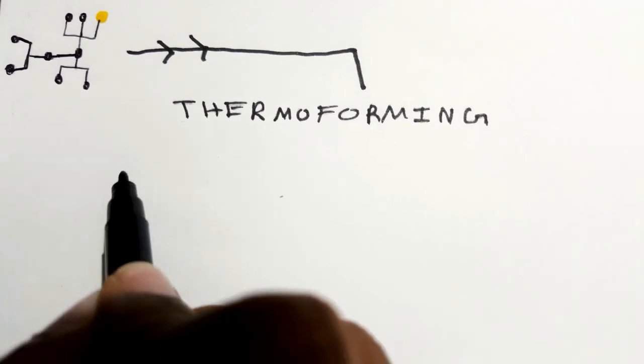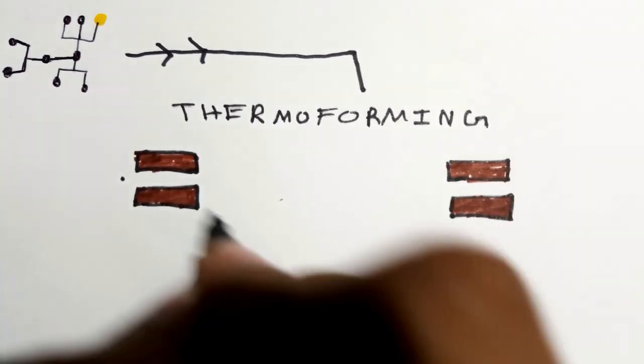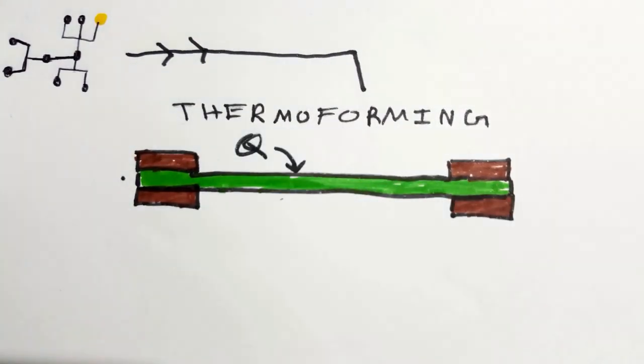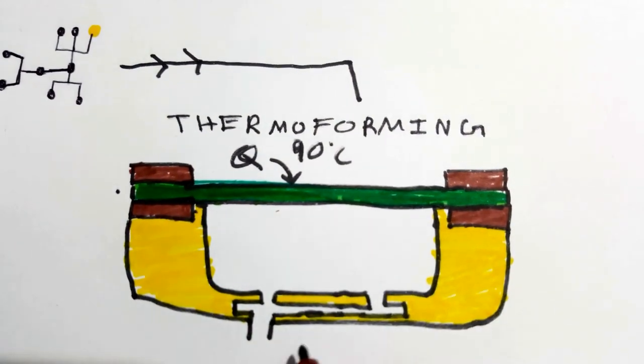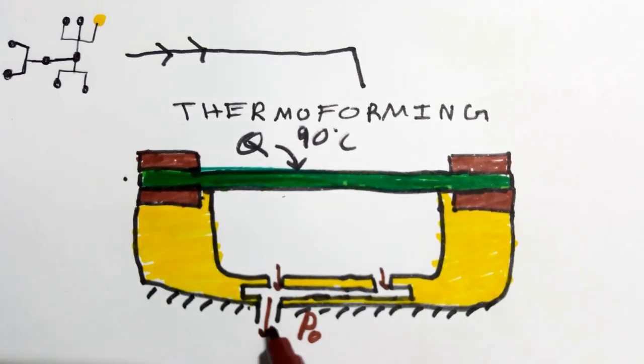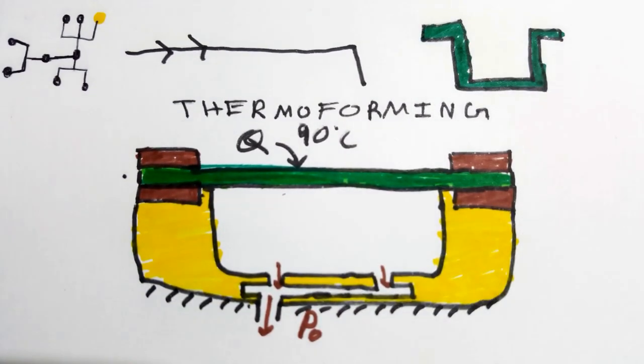Third and last type of thermoplastic moulding is thermoforming. Here, with the help of clamps, a polymer sheet is gripped around the mould. Heat is used to bring the polymer up to 90 degree Celsius. Vacuum is applied using small holes in the lower die. This gives the polymer sheet a perfect shape.